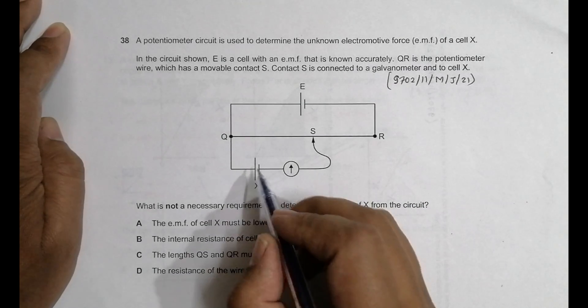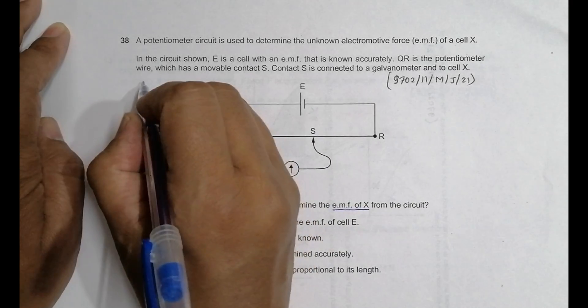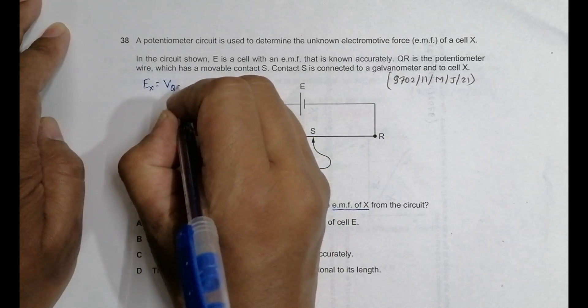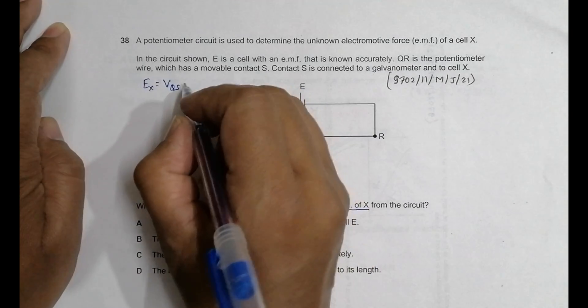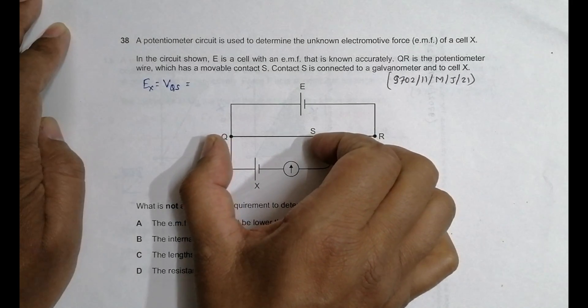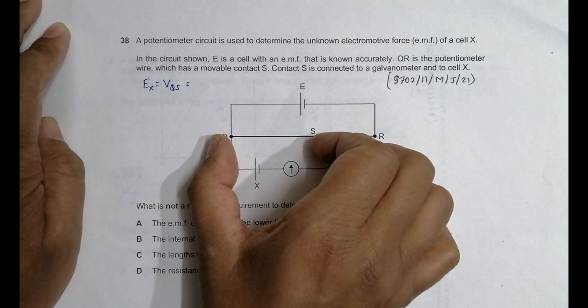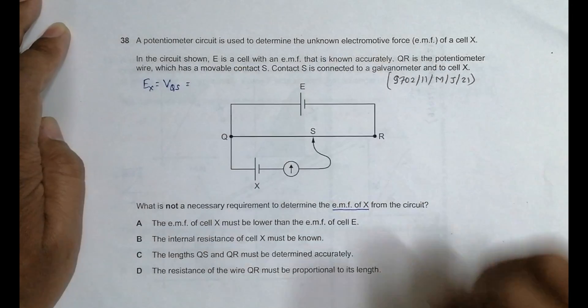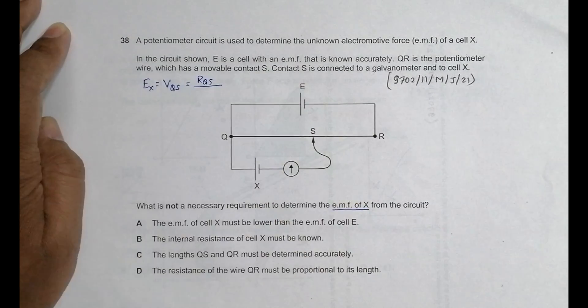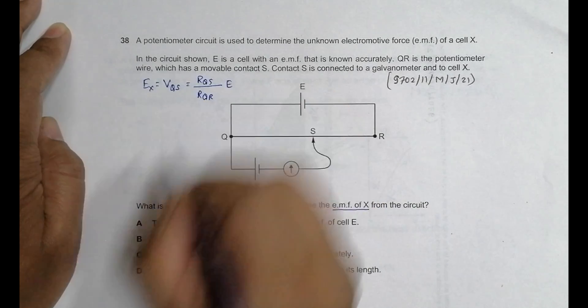So what we have here is when we determine the EMF of this cell, in that condition they say E of X will be equal to V of QS. Yes, VQS is equal to the potential divided portion, the divided potential of this. This VQS is the divided potential of some portion of this, and that's equal to RQS by the total R, RQR, into this E.